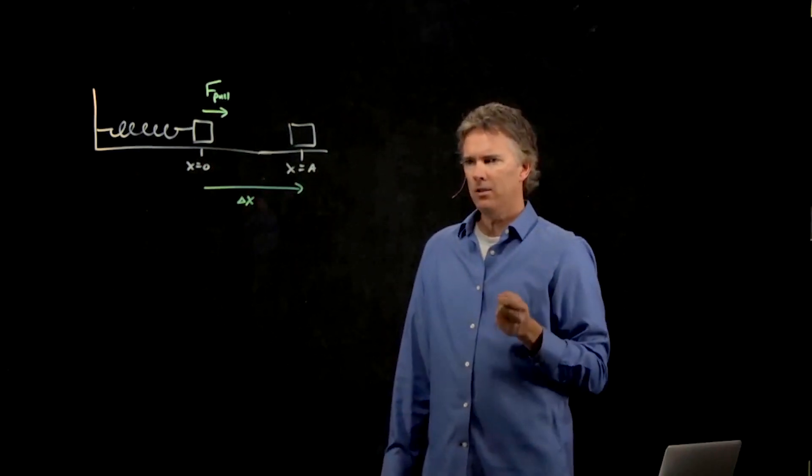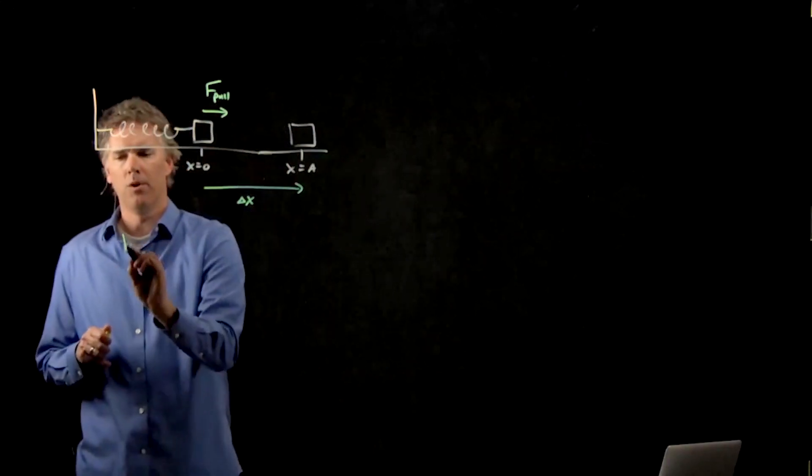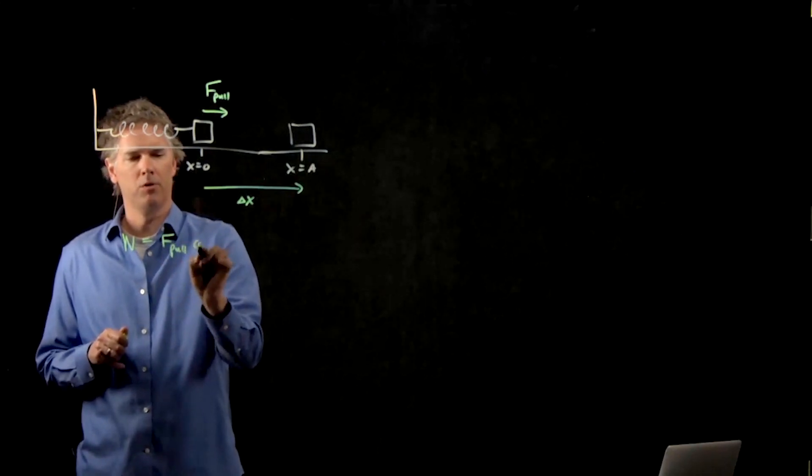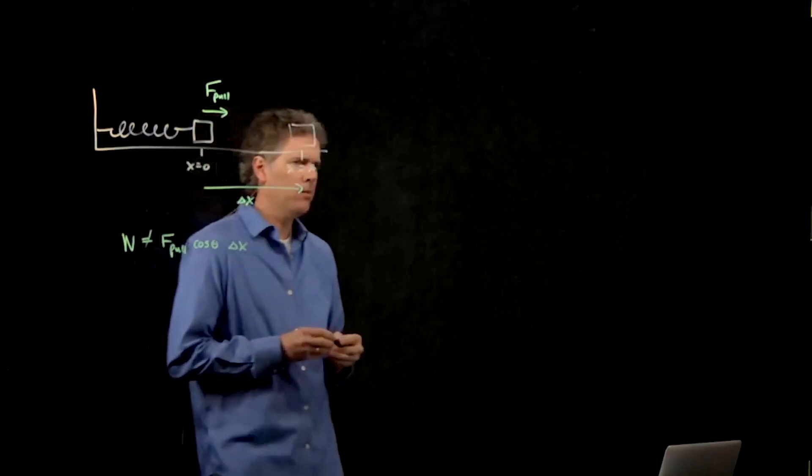We can't just write this. Work is not F pull cosine theta delta x. Why can't we do that?